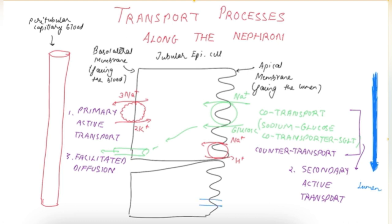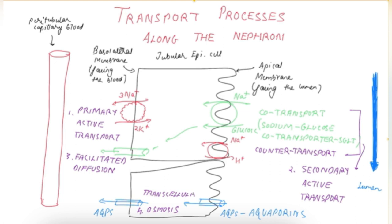Water moves through special water channels called aquaporins, which were discovered by Dr. Peter Agre. They are on both the apical and the basolateral membrane, and this is osmosis of water through the transcellular route. There is also paracellular movement of water through tight junctions — that is also osmosis. Finally, solute is also moved through the tight junctions, which is called solvent drag.